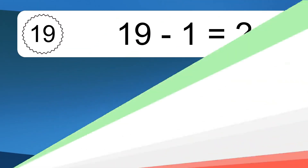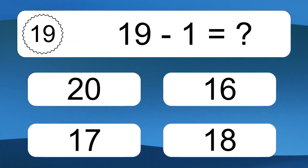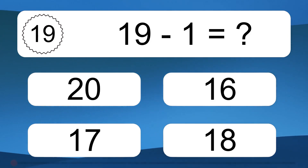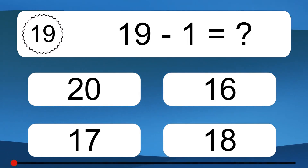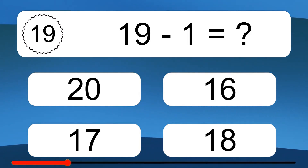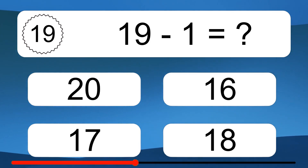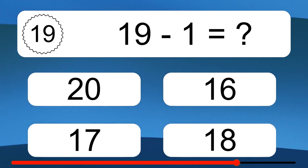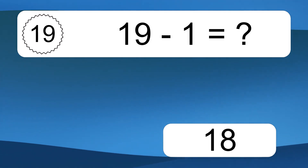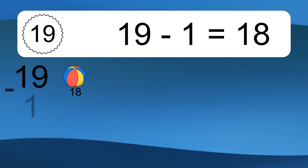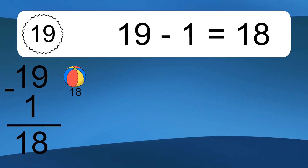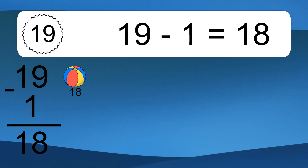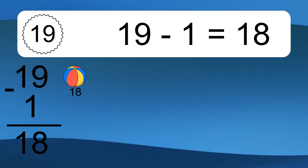19 minus 1 equals what? 19 minus 1 equals 18. Let's count it: 18.